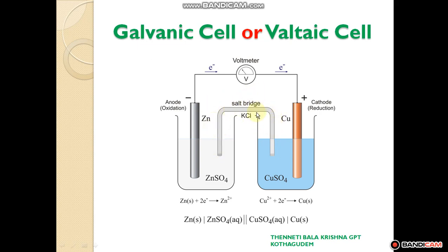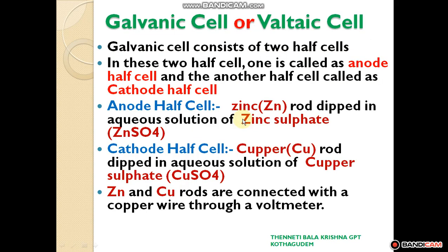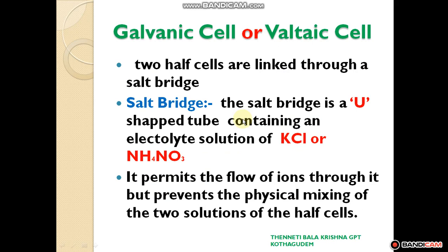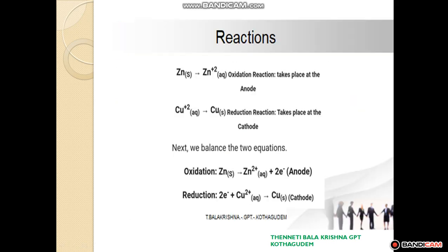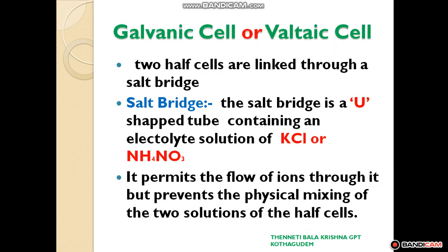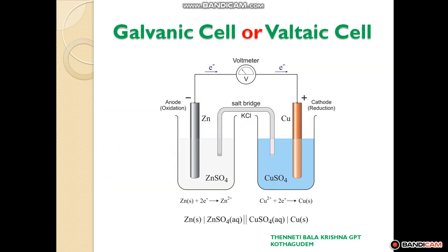The salt bridge contains KCl or ammonium nitrate in a gelatin gel solution. This tube is filled with KCl or ammonium nitrate chemical. This is the construction of the galvanic cell.